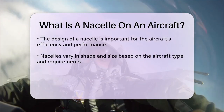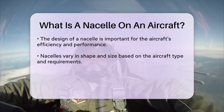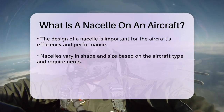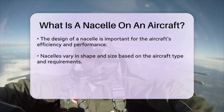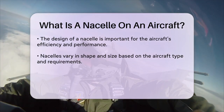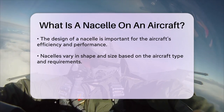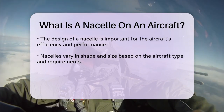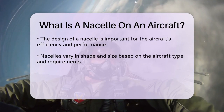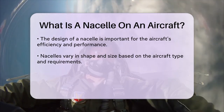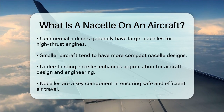The design of a nacelle is crucial for maintaining the efficiency and performance of the aircraft. Nacelles come in various shapes and sizes, depending on the type of aircraft and its specific requirements. For instance, commercial airliners typically have larger nacelles to accommodate high-thrust engines, while smaller aircraft may feature more compact designs.